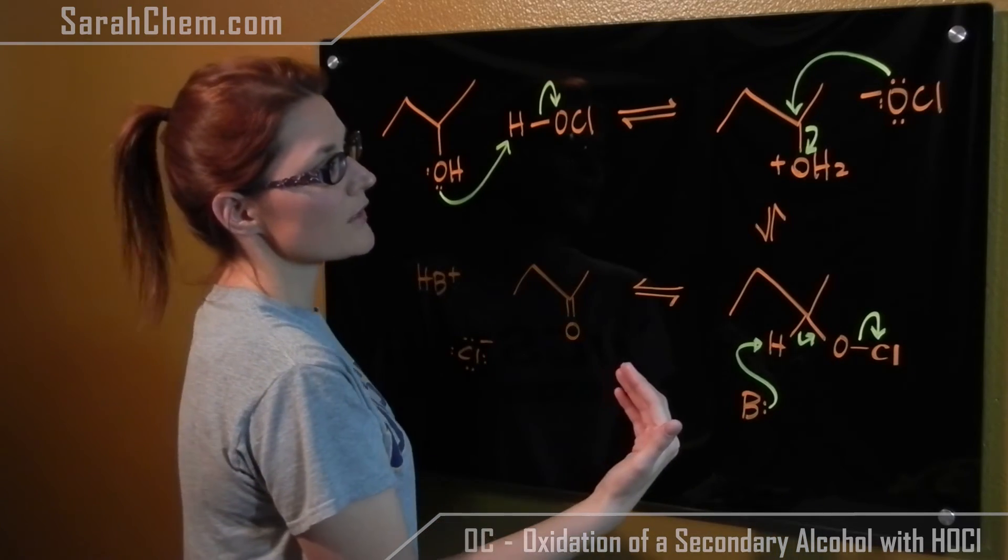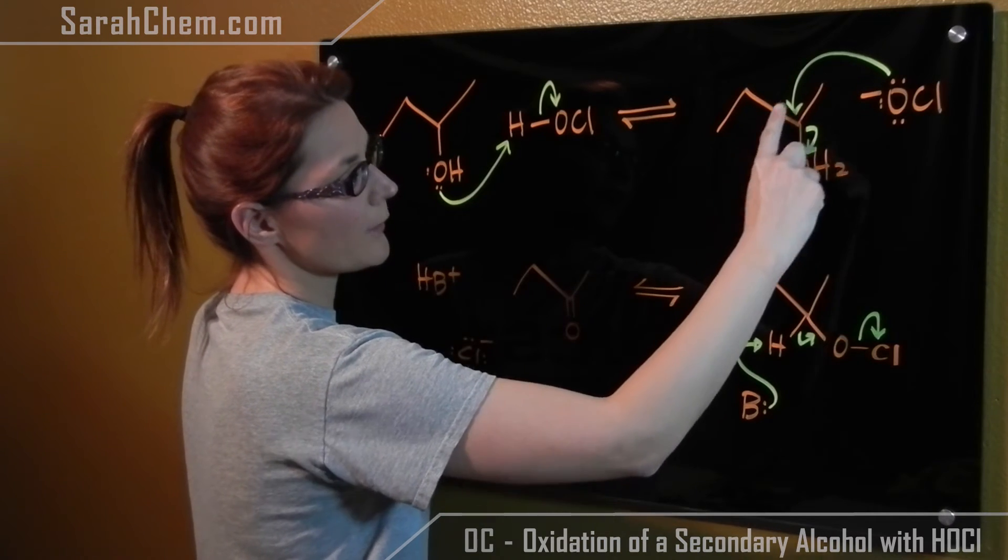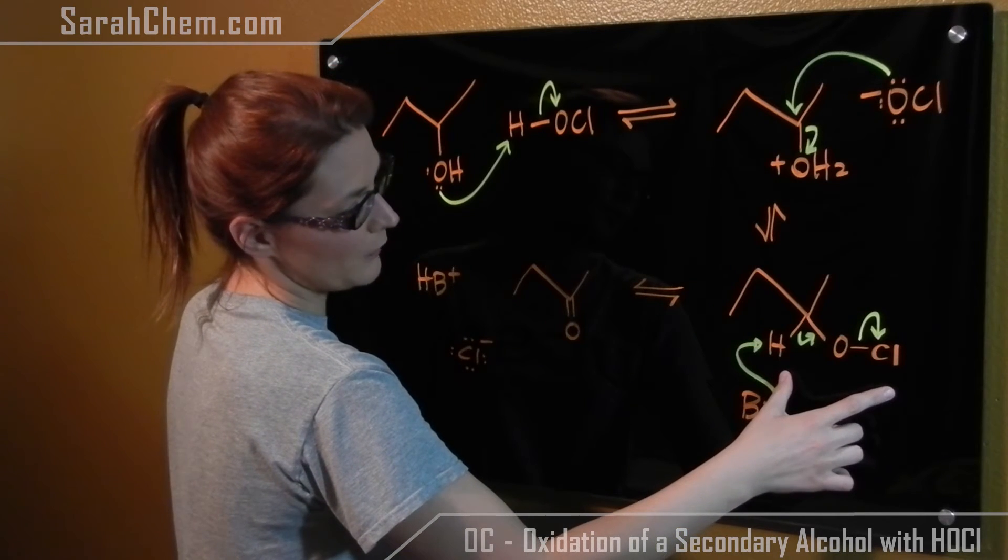The next step is an SN2 step where this group right here, our hypochlorite, will come and attack this carbon kicking off the protonated alcohol group. So now over here we form this group here.